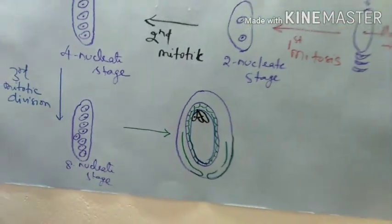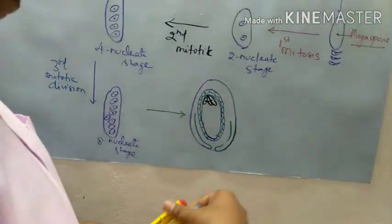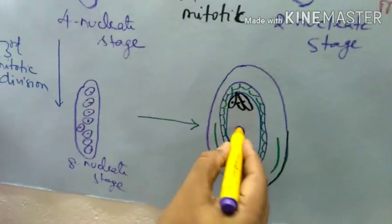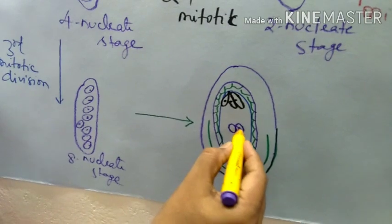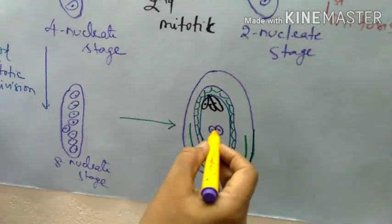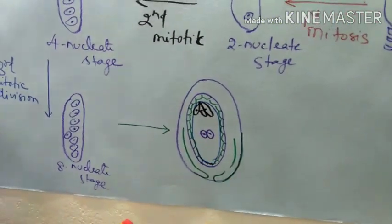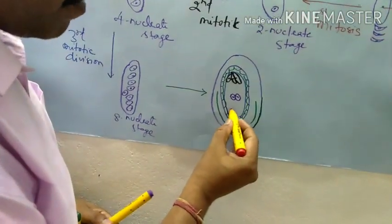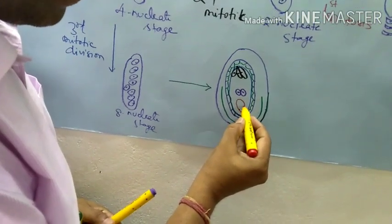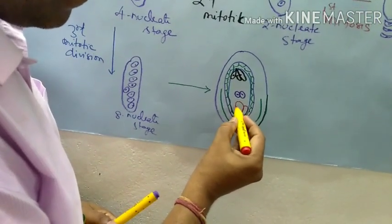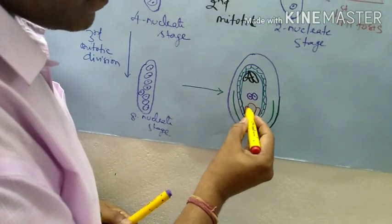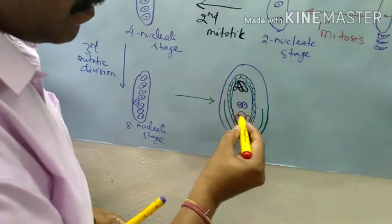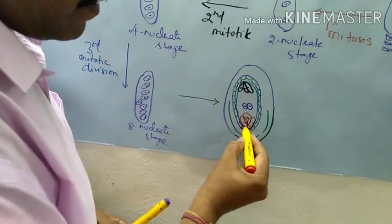Three cells will be arranged towards the chalazal end. In the center, you will find two nuclei coming over here, and three nuclei are at the chalazal end — so five. And towards the micropylar end, you will find a very large cell supported by another two cells.